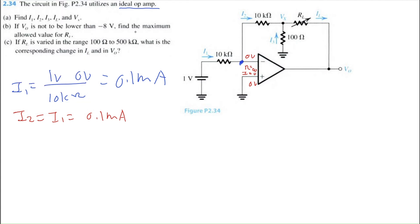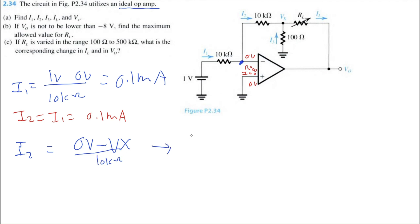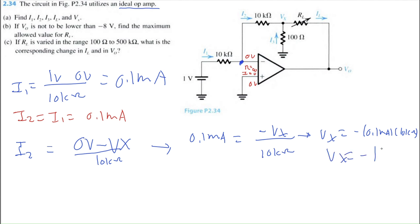Now let's find Vx. Using nodal analysis, I2 equals 0 volts minus Vx divided by 10 kilo-ohms. So 0.1 milli-amps equals negative Vx divided by 10 kilo-ohms. Therefore, Vx equals negative 0.1 milli-amps times 10 kilo-ohms, which is negative 1 volt.